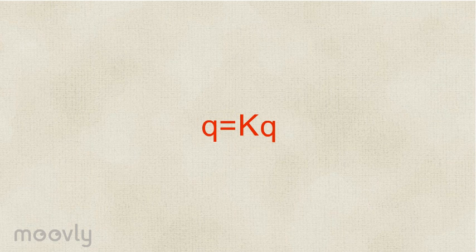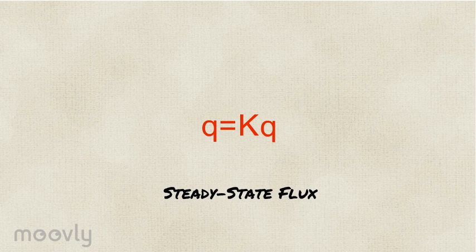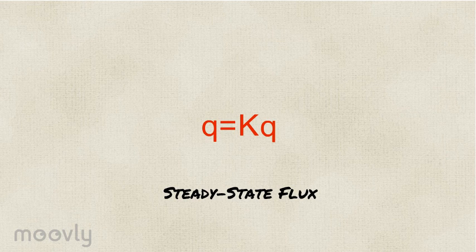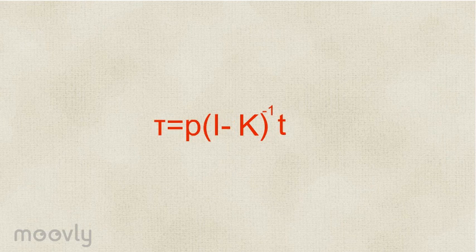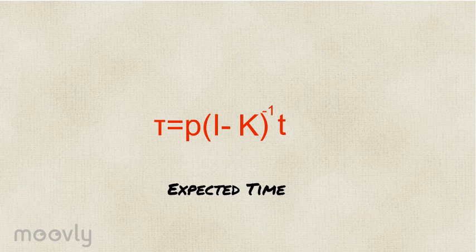For example, we can find the principal eigenvector of the matrix and get the steady state flux across the states. This would predict how likely each team is to win the game. We can also use a different formula to predict the expected time that a game would last.